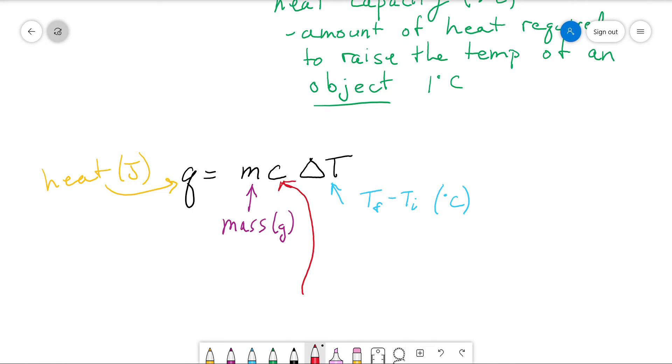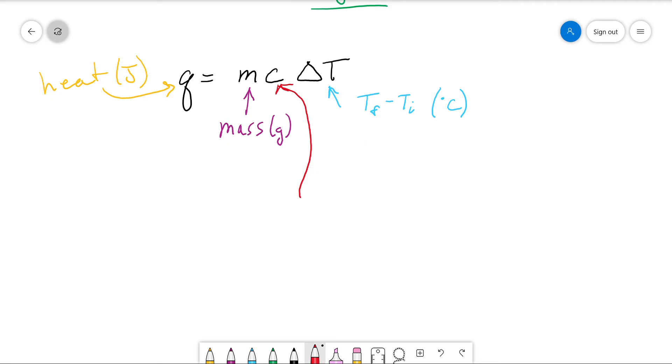And then c - what is c? Well, now because we're talking about a substance, it has a different name. Notice it's lowercase. This is called the specific heat capacity. Sometimes it's just referred to as specific heat, and sometimes it is referred to just as heat capacity. That's mostly because chemists just get lazy and they don't want to say the whole thing, specific heat capacity. So if you hear somebody say specific heat, they're referring to that specific heat capacity.